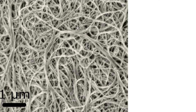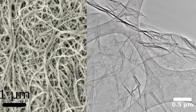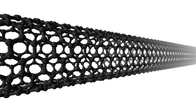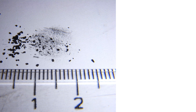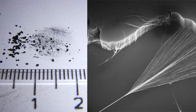Two of those are carbon nanotubes and graphene. Carbon nanotubes, like the name implies, are tiny tubes made of pure carbon. They come in a few varieties based on how many layers thick they are, how long they are, and if they're in a powder or neatly aligned in a vertical forest.